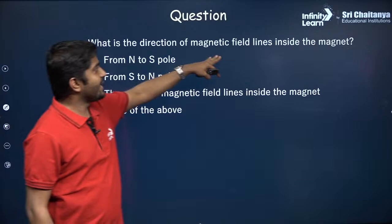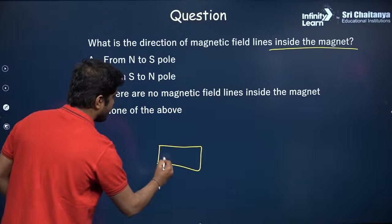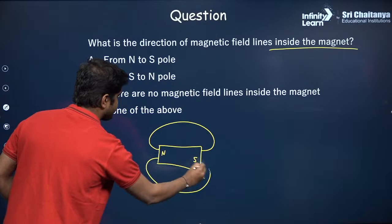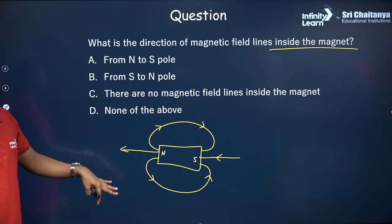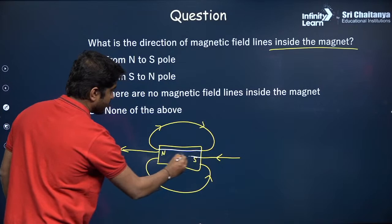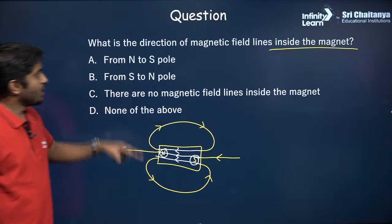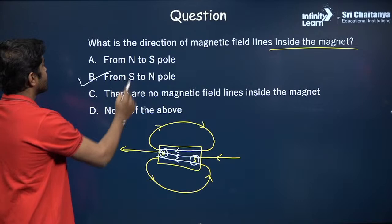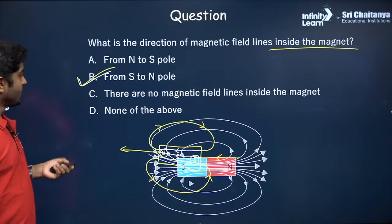Question: What is the direction of magnetic field lines inside the magnet? Outside the magnet field lines go from north to south, but inside they are closed loops. Inside the magnet, the direction of the magnetic field lines is from south to north. The correct option is B.